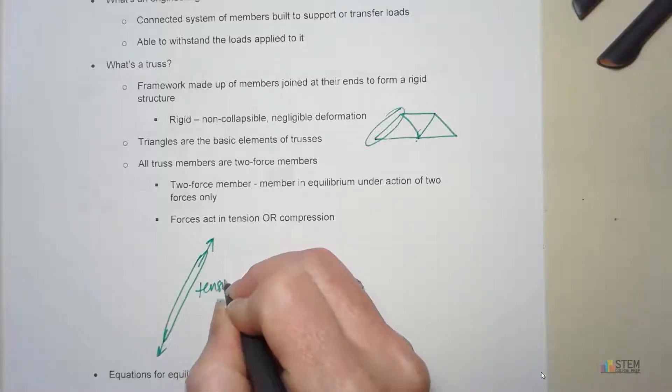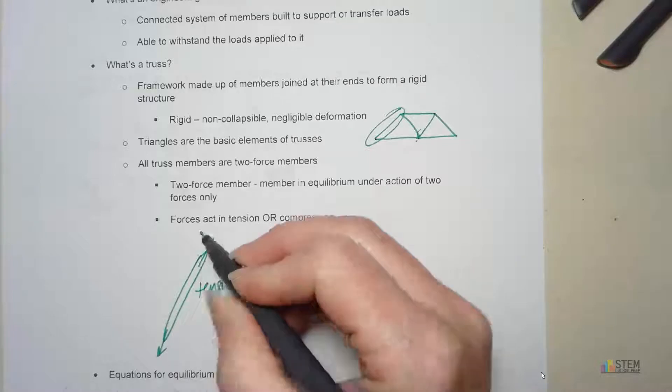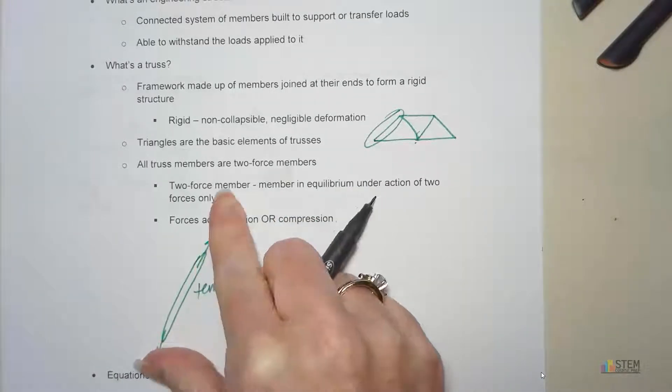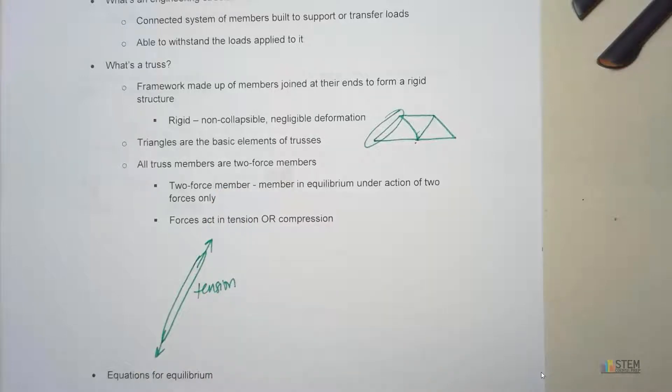This would be tension. And that's because these are pulling away. So the member itself is being pulled in different directions. So that's in tension.